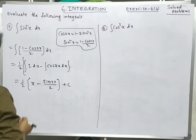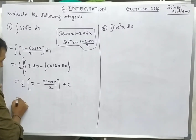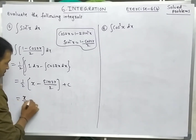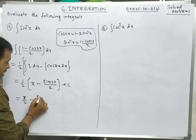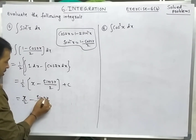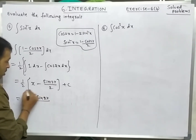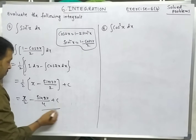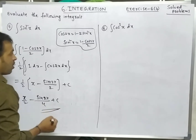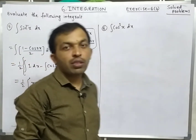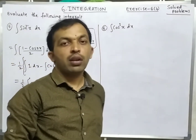So the result is (1/2)(x - sin 2x/2) + c. Or, multiplying (1/2) inside: x/2 - sin 2x/4 + c. This is the required integration.